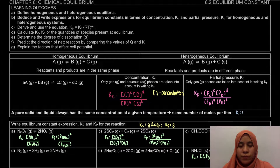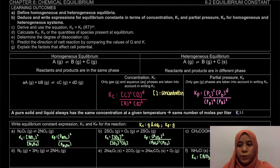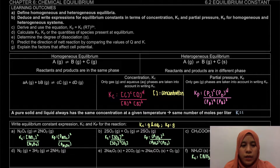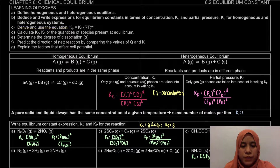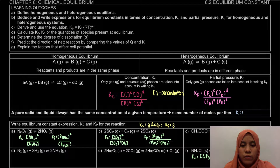Assalamualaikum and hello everyone. Welcome to a new video for 6.2 equilibrium constant. In this video, we will learn to derive and use the equation Kp is equal to Kc times RT to the power of delta N.